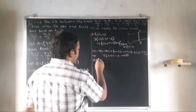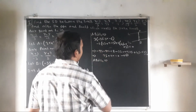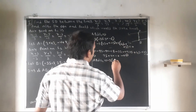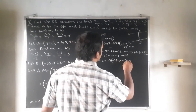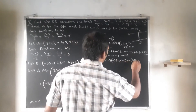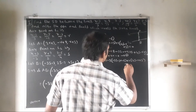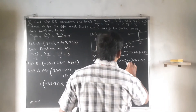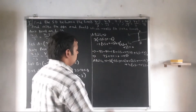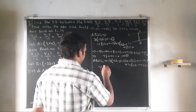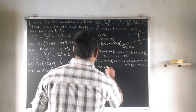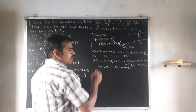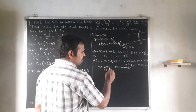Since AB is also perpendicular to L2, whose direction ratios are -3, 2, 4, we apply the dot product to get equation 2: 29S + 11R = 0. Solving equations 1 and 2 gives R = 0, S = 0.